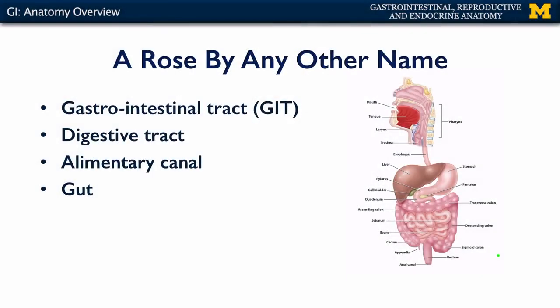With respect to the digestive system, the bulk of the viscera contributes to something called the gastrointestinal tract, or the GIT. This is the space starting with the mouth and the oral cavity and ending with the anus, and all structures between that people refer to as the GIT, the digestive tract, the alimentary canal, or the gut.